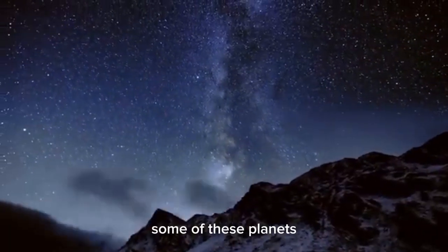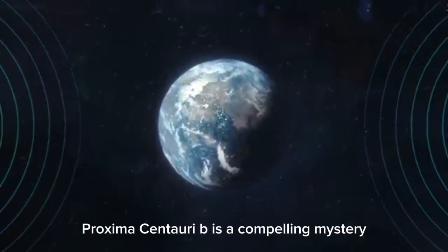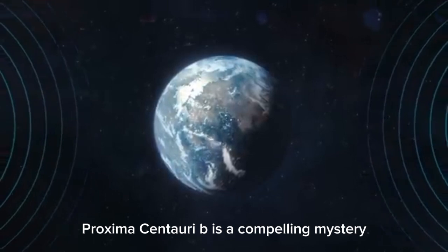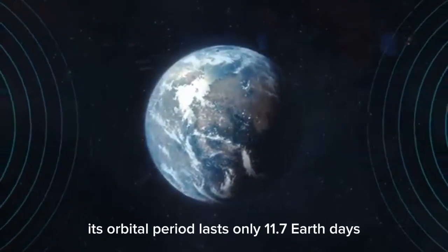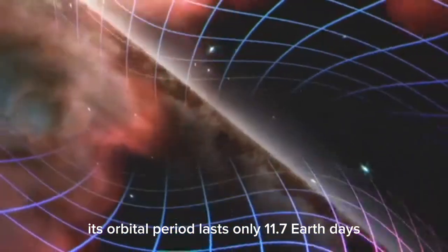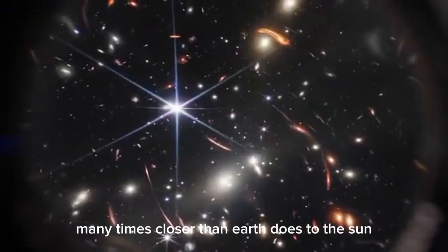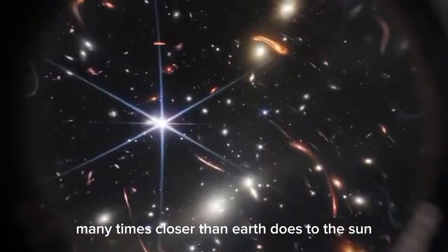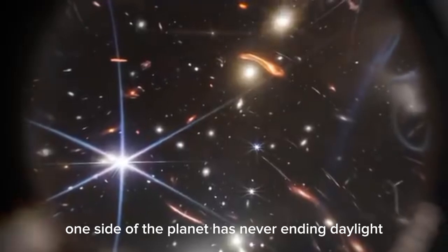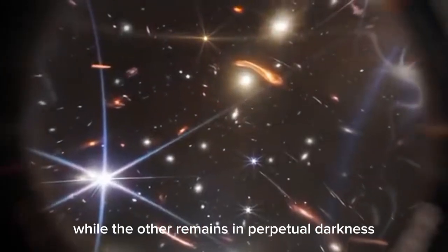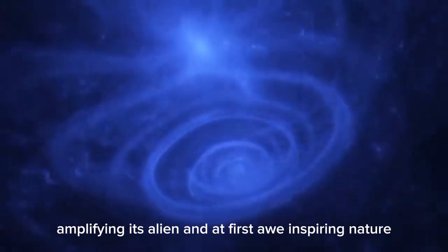Amidst a staggering 206 trillion stars dispersed across the universe, the possibilities for discovering planets seem endless. Some of these planets move much more freely through space, like enormous wanderers. Proxima Centauri b is a compelling mystery among this vast collection of astronomical objects. Its orbital period lasts only 11.7 Earth days, and it orbits its star at a distance many times closer than Earth does to the Sun.